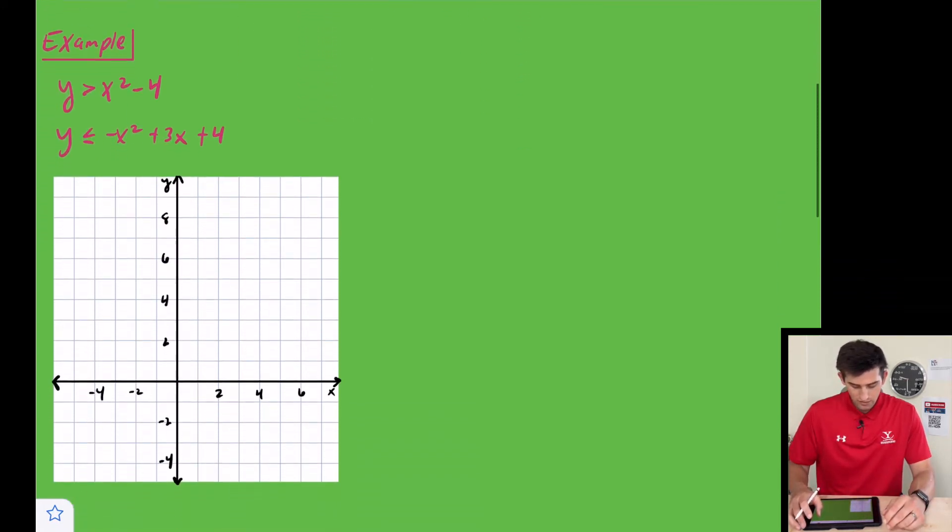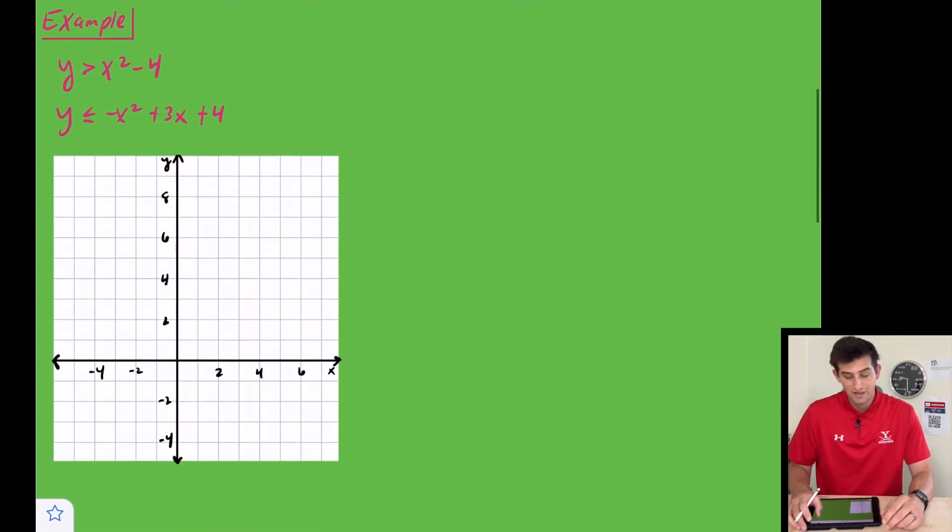Let's look at one example here for quadratic inequality systems. Our first one is y is greater than x squared minus four.